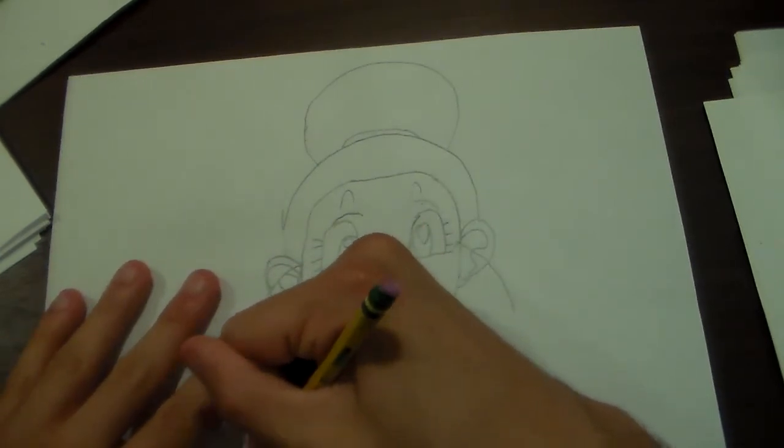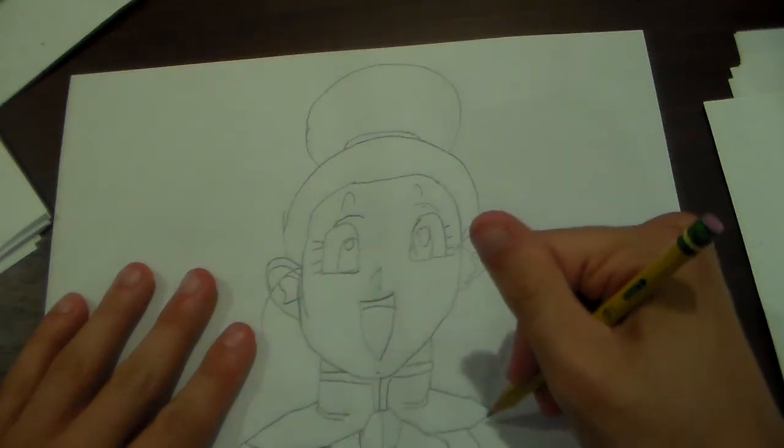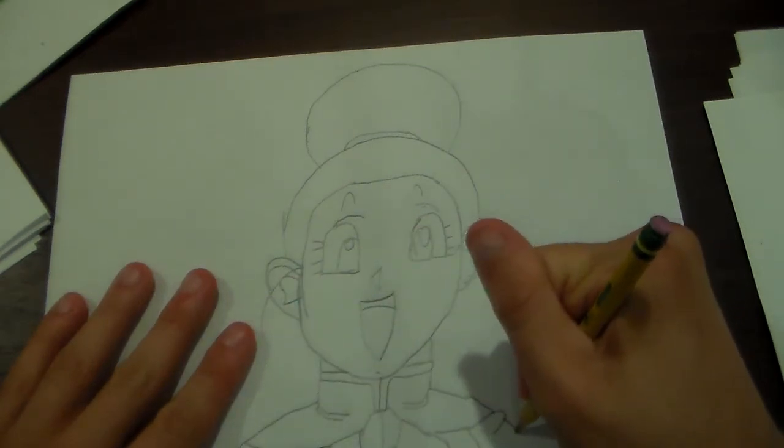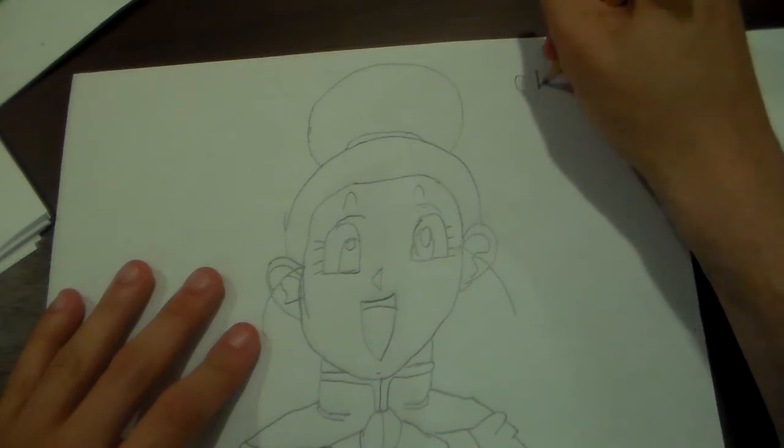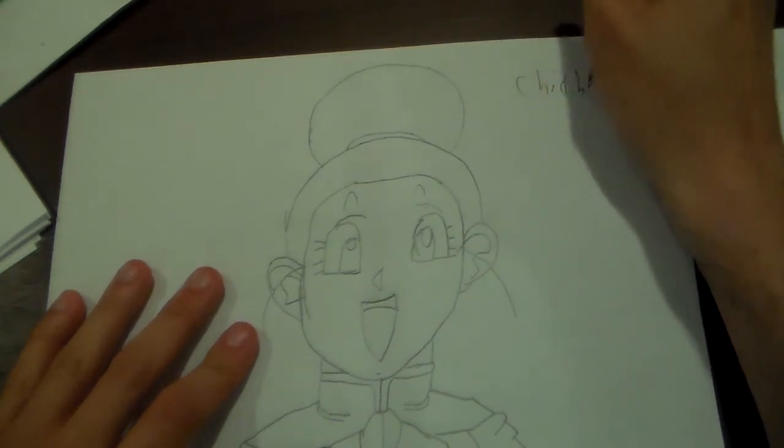Okay, next up. Here's her arms here. And done. That is how you draw Chi-Chi, Ox King's daughter.